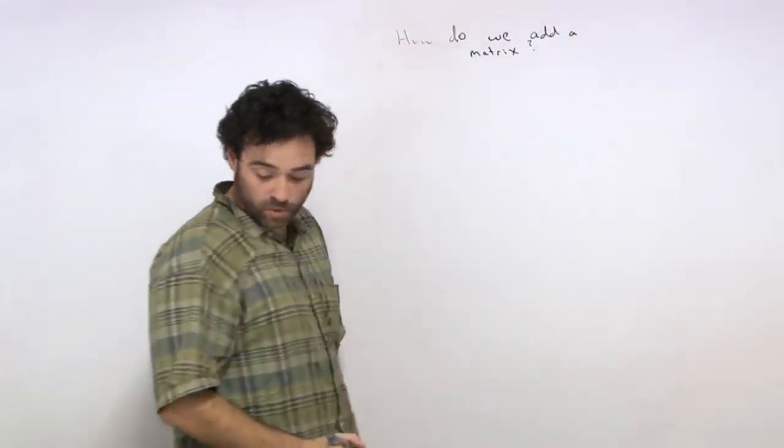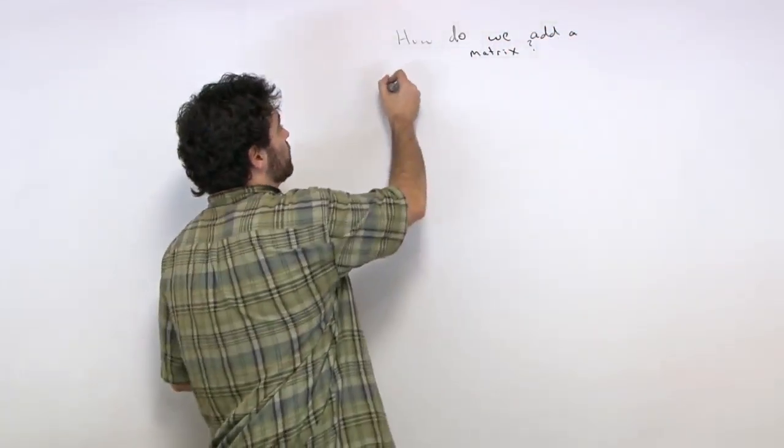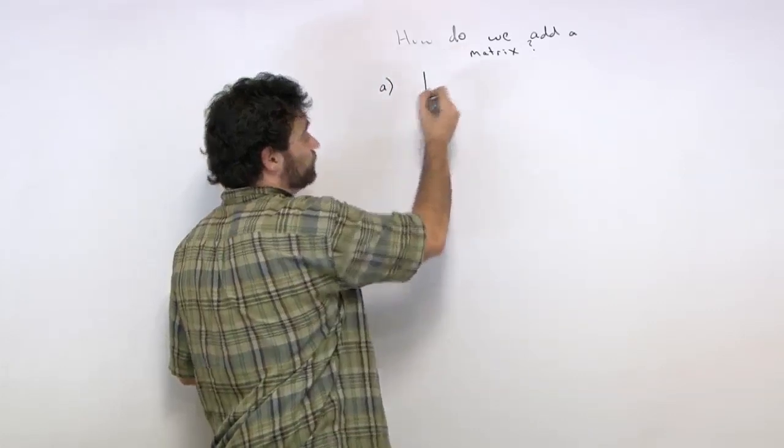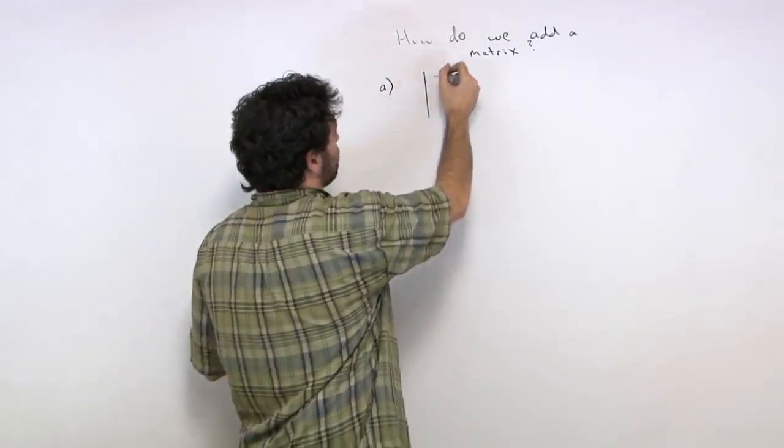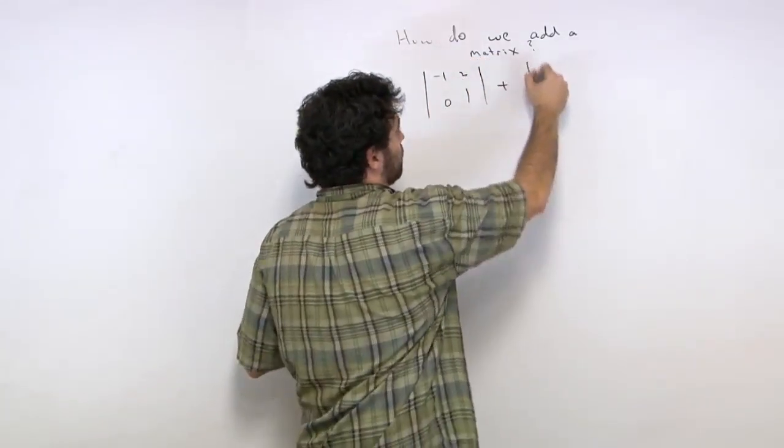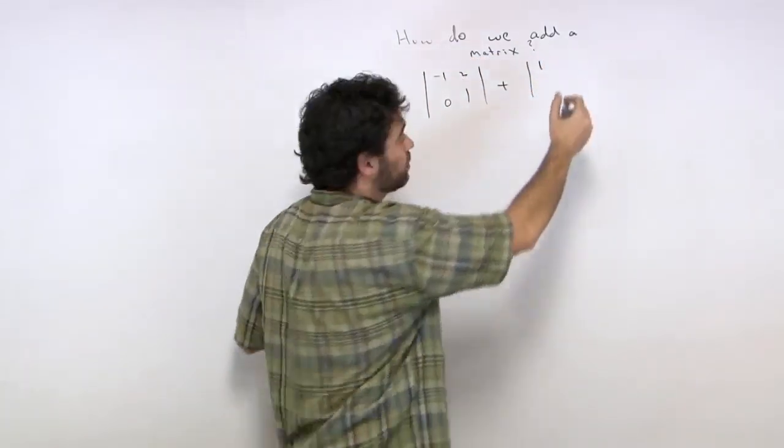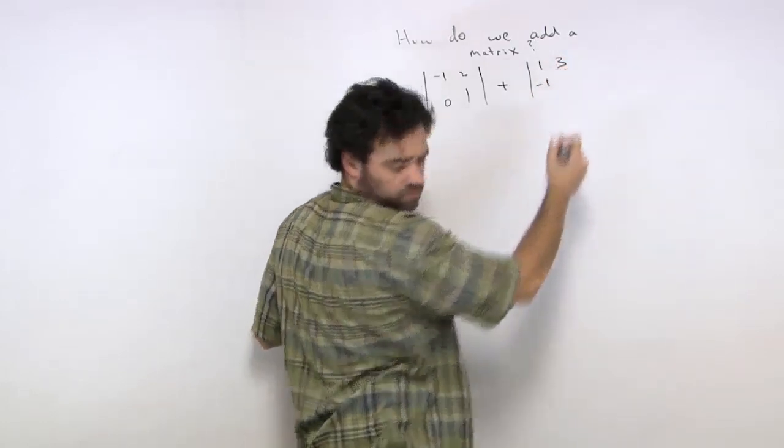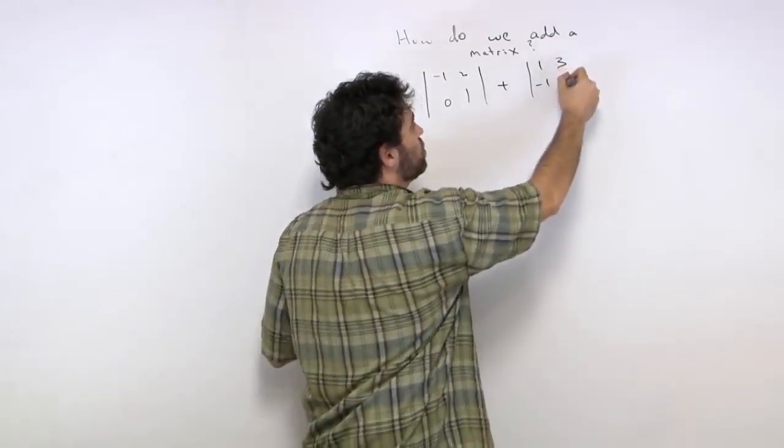Okay, so we take a look at our first example, start out with a nice 2 by 2. So we have negative 1, 0, 2, 1. You want to add that to 1, 3, negative 1, 2.